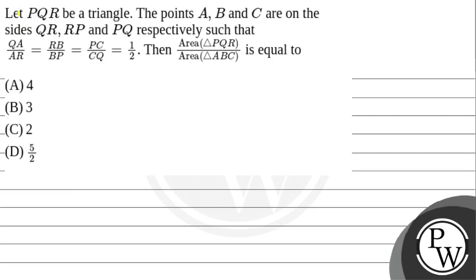Hello guys, let's see the question. The question is: let PQR be a triangle. The points A, B, C are on the sides QR, RP, PQ respectively, such that QA/AR = RB/BP = PC/CQ = 1/2. The area of triangle PQR upon area of triangle ABC is equal to which option — option 2 or option 5/2?